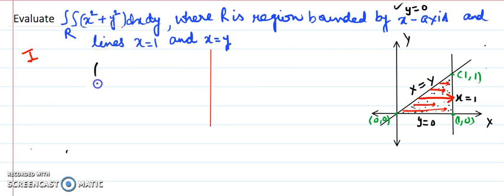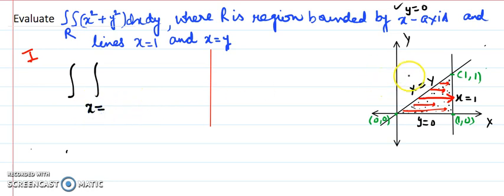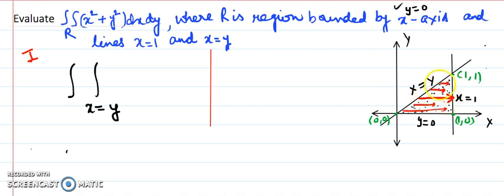So the first limit I have obtained is that x starts from x equals y. Now for the upper limit: when moving in the x direction through this region, the ending boundary is the line x equals 1.